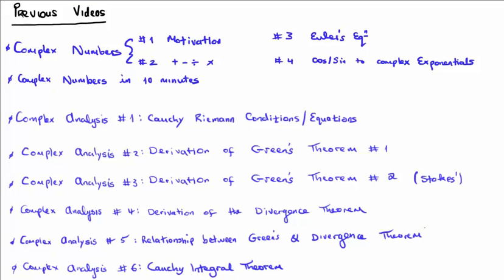Before we move on I'd like to recap on the previous videos which are relevant. Of course we're discussing complex analysis so we need some complex numbers. In this series on complex analysis I derived the Cauchy-Riemann equations, Green's theorem, the divergence theorem and I discussed the relationship between Green's theorem and the divergence theorem. Finally, in the most recent video, number 6, I derived the Cauchy-Integral theorem.